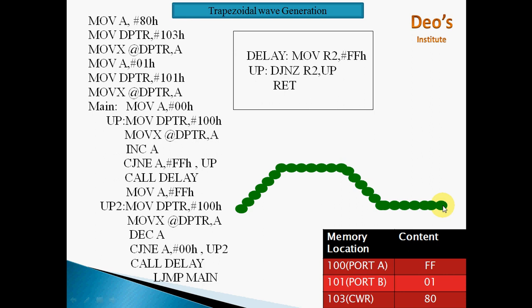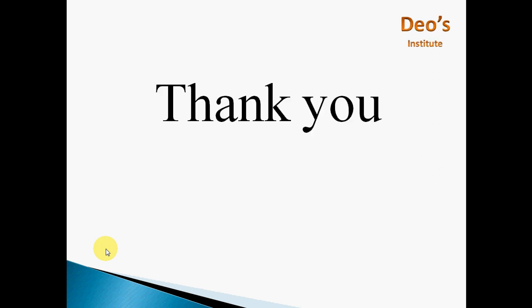When the delay procedure returns, LJMP MAIN brings control back to the start. Again it starts from 00H — the first loop increments from 00H to FFH and calls delay, and the second loop decrements from FFH to 00H and calls delay. This is how different waveforms — triangular, square, and trapezoidal — are generated using the 8051 through 8255 as a Programmable Peripheral Interface.